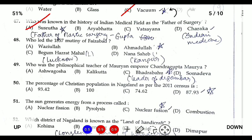Question forty-eight: who led the 1857 mutiny in Faizabad? The answer is Ahmadullah. Nana Sahib led the mutiny in Kanpur, and Begum Hazrat Mahal led in Lucknow.